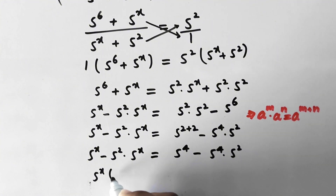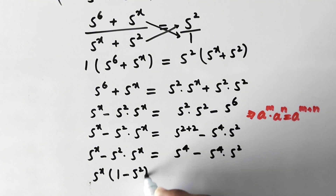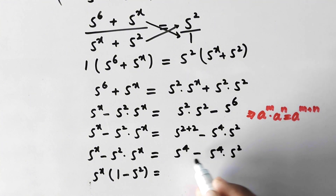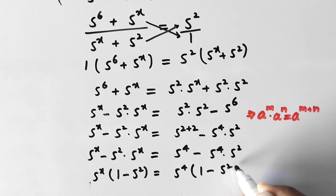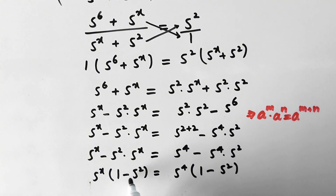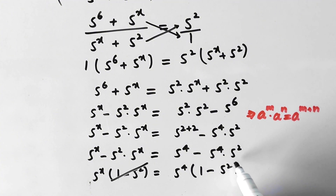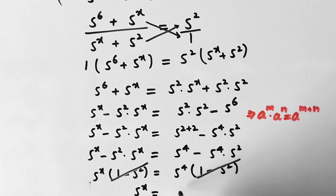Taking out common factors, we get 5 to power x times (1 minus 5 square) on the left, and 5 to power 4 times (1 minus 5 square) on the right. The term (1 minus 5 square) is the same on both sides, so it cancels out, and we get 5 to power x is equal to 5 to power 4.